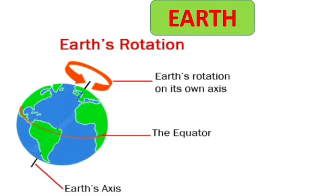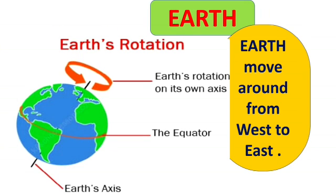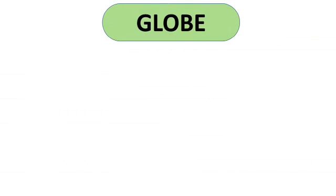The picture shows the rotation of Earth. Earth moves from west to east. Geographers have developed different means of representing the earth on a smaller scale. To make its study easy, they made globe and maps.